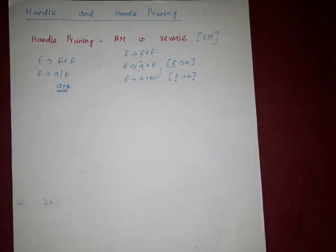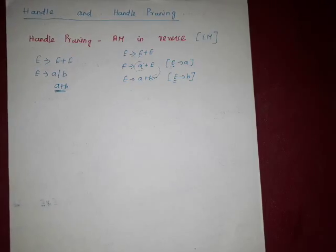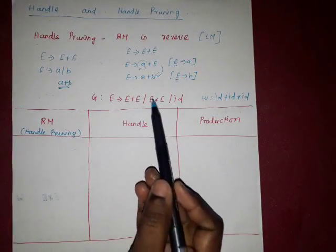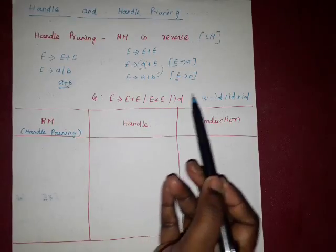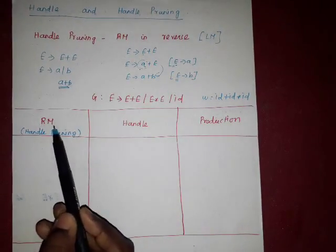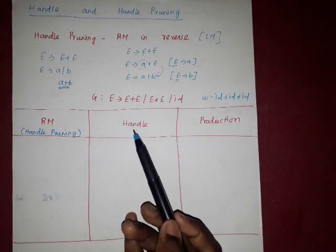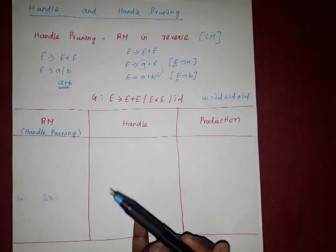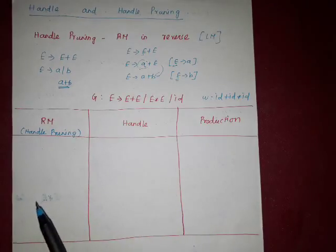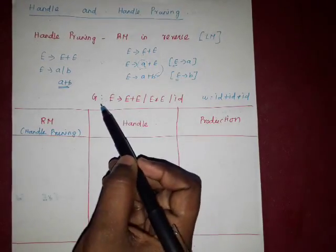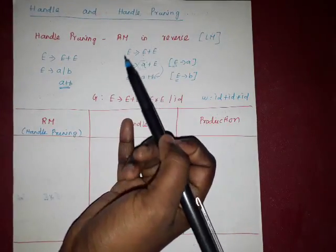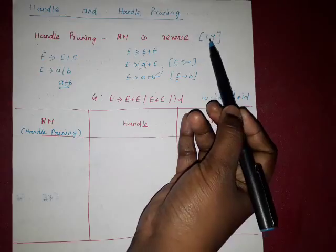We can easily understand this by a simple example. Let us see one example for handle and handle pruning. This is the example: E tends to E plus E, slash E star E, and slash id. I am going to take the input sentence id plus id star id. This table shows the rightmost derivation proved by handle pruning. The second column shows which symbol is going to be reduced or handled in a particular step — that is the handle. The third column shows the production used to reduce. In this example, I am going to reduce the input sentence to the start symbol of the grammar by handle pruning, which is rightmost derivation in reverse — meaning we reduce the leftmost symbol.